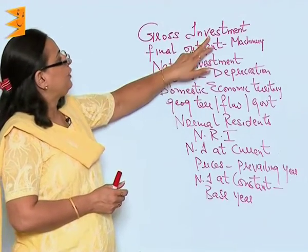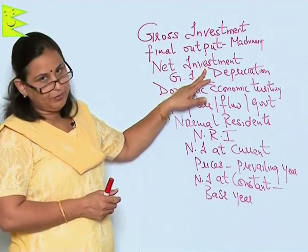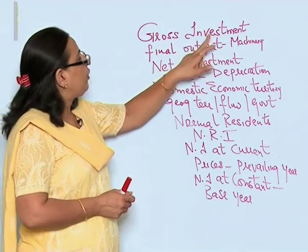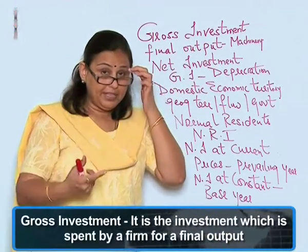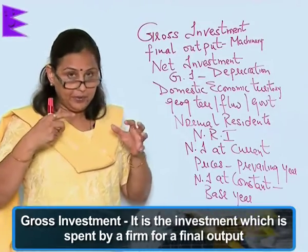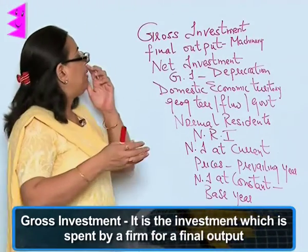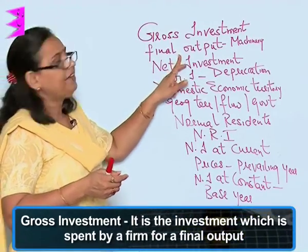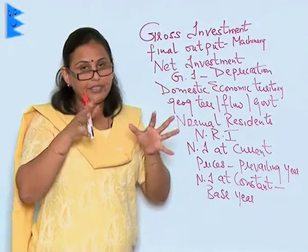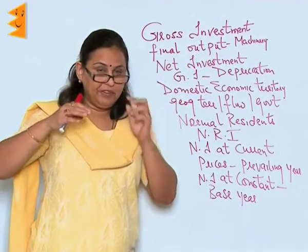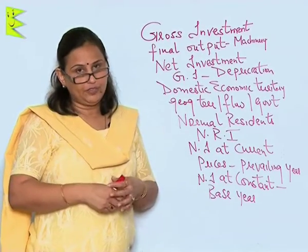Let's try and understand gross investment and net investment. Gross investment is the investment or the money which is invested or spent by a firm for the final output — those goods and things which are meant for further production.